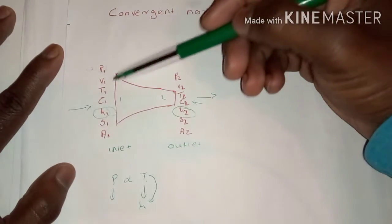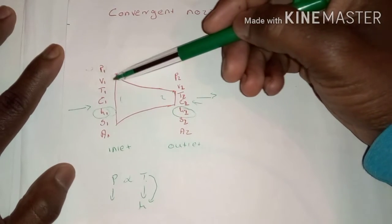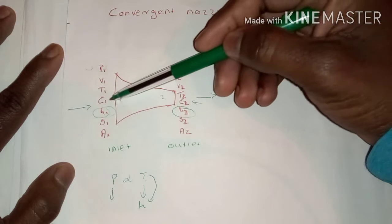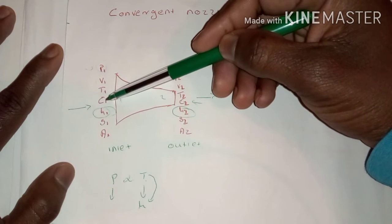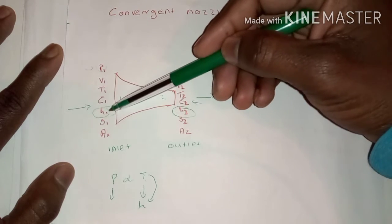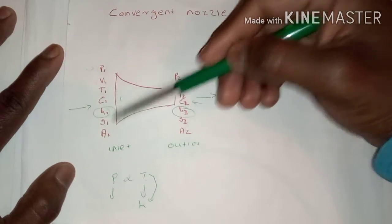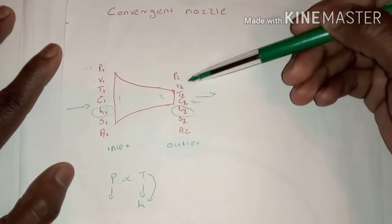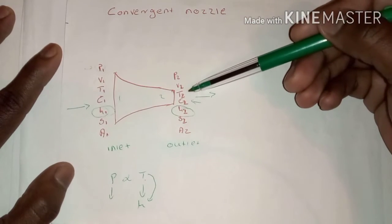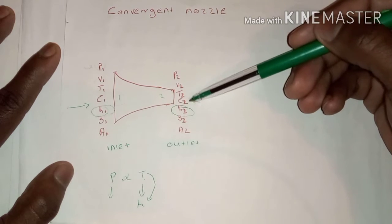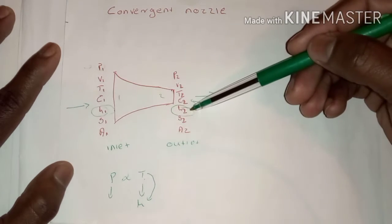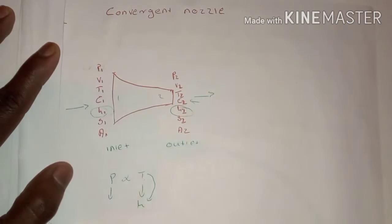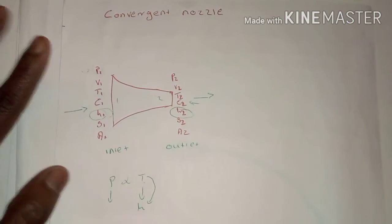We have pressure P1, volume V1, temperature T1, velocity C1, enthalpy H1, entropy S1, and area A1 at the inlet. The same applies at the outlet: P2, V2, T2, C2 — where C is the velocity — H2, S2, and area A2.